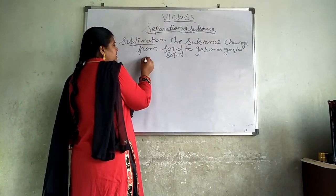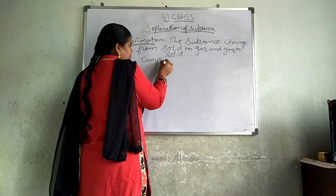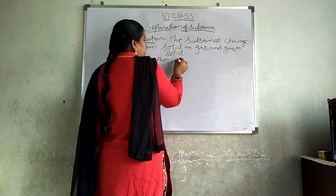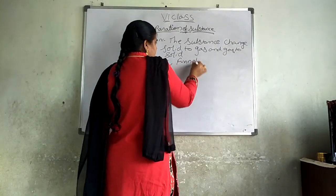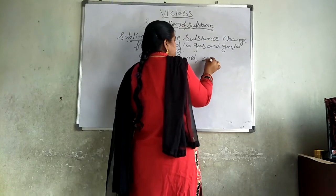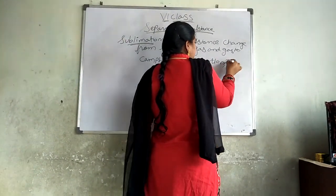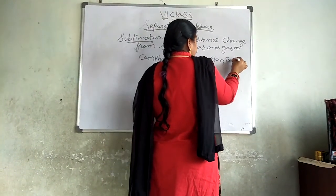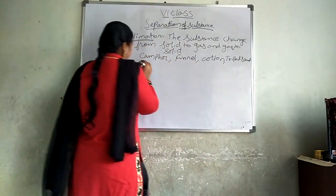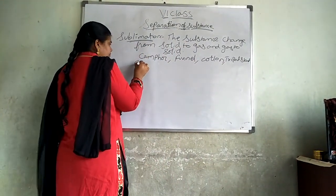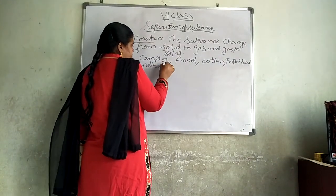So what are the things required here? The things required are camphor, funnel, cotton, tripod, sand, and candle.